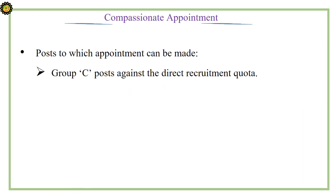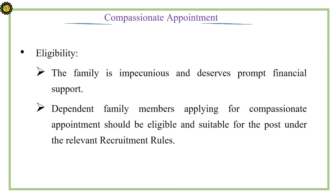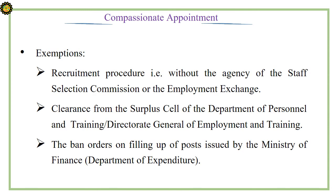Posts to which appointment can be made: Group C post against the direct recruitment quota. Eligibility requires that the family is impecunious and deserves prompt financial support, and that the dependent family member applying should be eligible and suitable for the post under the relevant recruitment rules. Exemptions include: the normal recruitment procedure through the Staff Selection Commission or the employment exchange; clearance from the surplus cell of the Department of Personnel and Training or Directorate General of Employment and Training; and the ban orders on filling up posts issued by the Ministry of Finance.